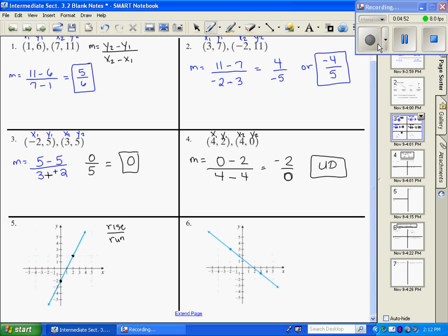Count how many do you go up. So let me use different colors. So 1, 2, 3, 4. So you rise 4, and then you run. You go to the right, 2. So then simplify that. 4 divided by 2 is just 2. So my slope of this line is 2.